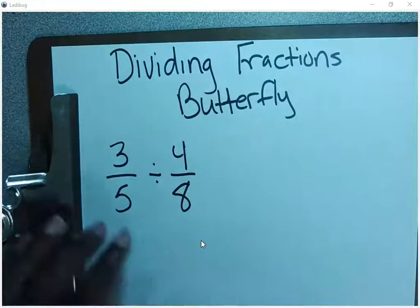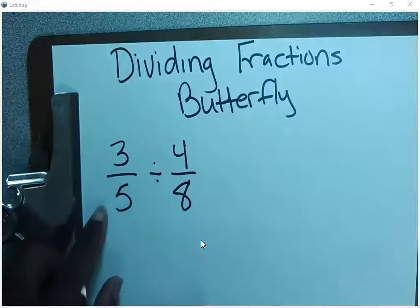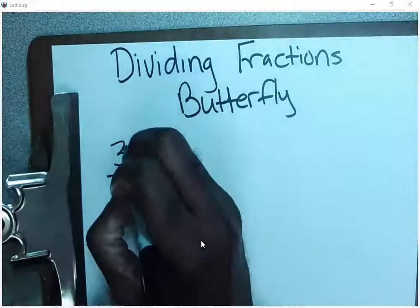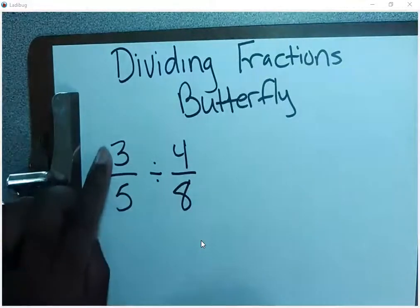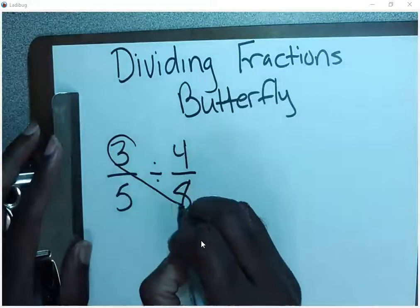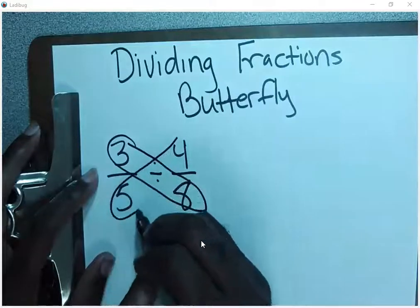All right, here we have two fractions, three-fifths divided by four-eighths. So we're going to start by drawing a butterfly. We're going to connect the opposite numerator with the opposite denominator, so three and eight will connect, and then we're going to connect four and five.